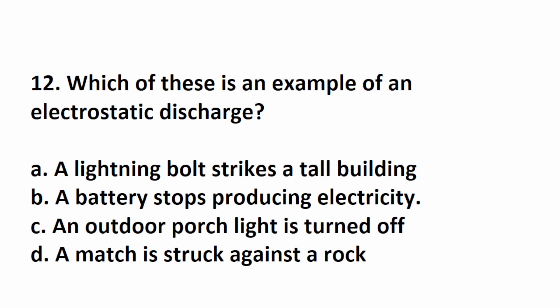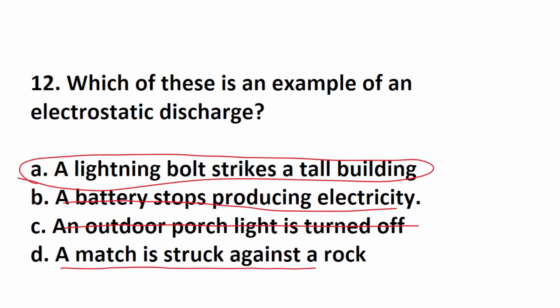Number 12 says, which of these is an example of an electrostatic discharge? This one is going to be A, a lightning bolt striking a tall building. When a battery stops producing electricity, that's not an electrostatic discharge. An outdoor porch light is turned off, that's just a switch being turned off. And a match struck against a rock, this is an example of a chemical reaction, not an electrostatic discharge. So the correct answer is A.